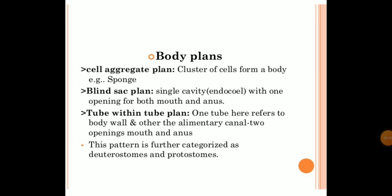Coming to body plans: the cell aggregate plan is nothing but a cluster of cells forming a body. For example, sponges (Porifera) — the whole body is made up of a single type of cells, so that is called the cell aggregate plan. The second is the blind sac plan, which has a single cavity (endosac) with one opening serving as both mouth and anus, as seen in sponges.